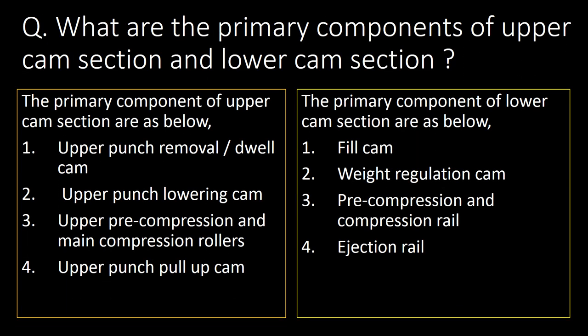What are the primary components of the upper and lower cam sections? Upper cam section components are: upper punch removal/dwell cam, upper punch lowering cam, upper pre-compression and main compression rollers, and upper punch pull-up cam. Lower cam section components are: fill cam, weight regulation cam, pre-compression and compression rail, and ejection rail.